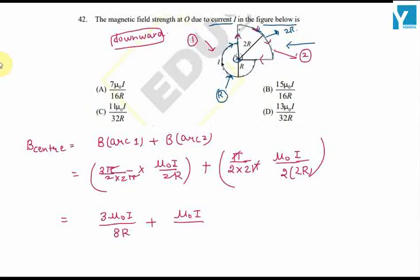So this implies 16R is the LCM, so this is 6μ₀I plus μ₀I, which equals 7μ₀I/16R.